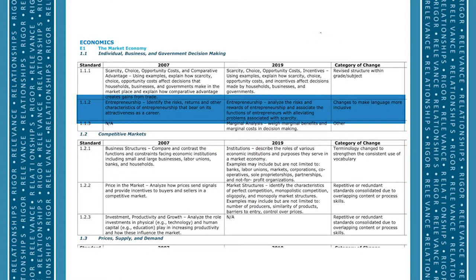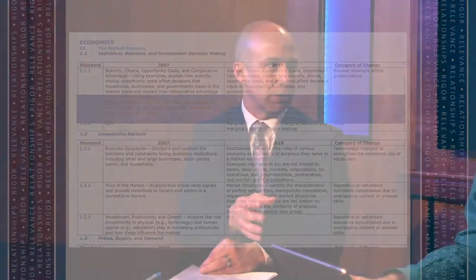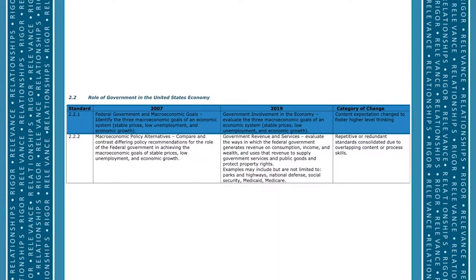As we get under the language examples, standard 1.1.2 about entrepreneurship just said 'identify the risks' — identify is great, but you're just doing more of a listing. Now we're having students analyze the risks and the rewards, looking at both the good and the bad and making a judgment. Another example was 2.2.1 with the federal government and macroeconomic goals — another 'identify,' more of a list. Whereas now they're evaluating. We're not telling students what to think; they evaluate and make that judgment for themselves when they've looked at both sides of an issue.